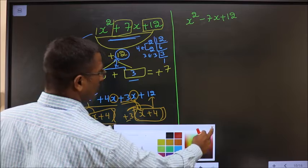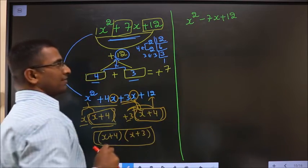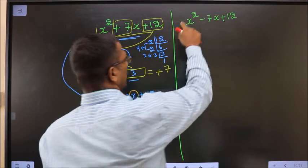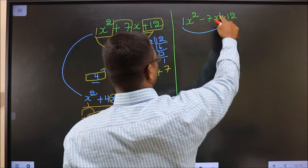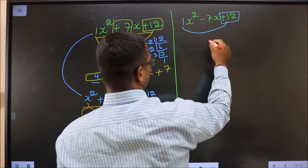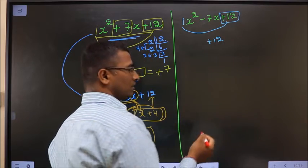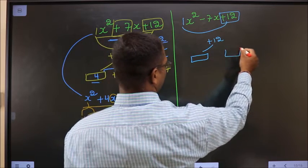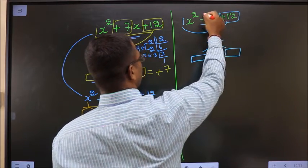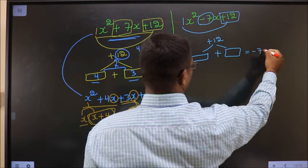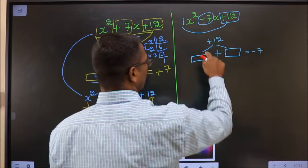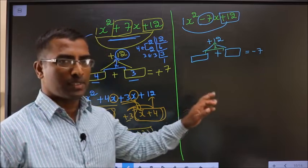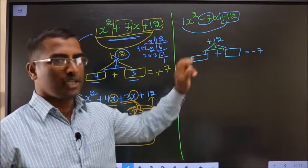Now if there is a negative sign before 7, what change does it undergo? See Step 1: whatever you have here, multiply with the constant, which is plus 12 in this case, so it will be plus 12. Now you should look out for two numbers such that when you add them you should get minus 7, and also when you multiply these two you should get plus 12. Look out for two numbers such that when you add you get minus 7 and when you multiply you get 12.